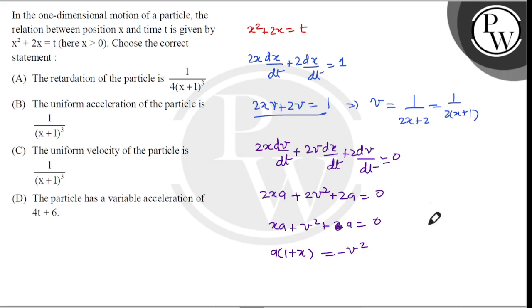And v ki value already one upon two times x plus one, so a is minus one upon four into x plus one whole square, which means acceleration ki value is minus one upon four into x plus one whole cube.